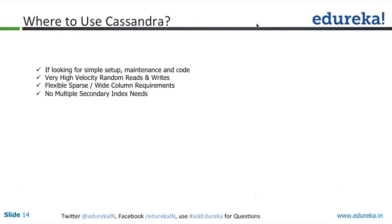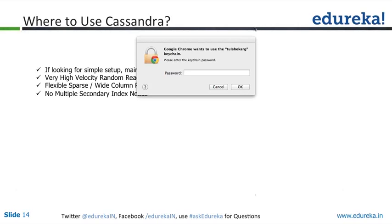But if you have an application with a requirement for group-by kind of functionality, Cassandra is probably not the right system. It does support secondary indexes, but when you bring in secondary indexes, its internal overhead becomes so high that the overall performance comes down. The more secondary indexes you use, the less the performance. So you can use Cassandra where you have less secondary indexes, want a very simple setup and maintenance, very high velocity of random reads and writes, and wide column requirements.